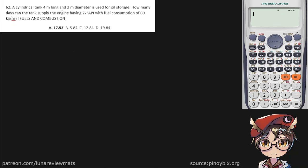A cylindrical tank, 4 meters long and 3 meters in diameter, is used for oil storage. So our cylindrical tank is 4 meters long. It has a diameter of 3 meters.